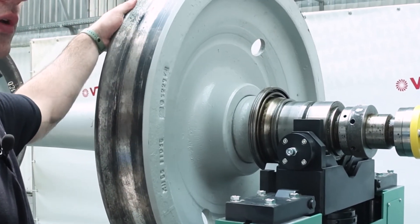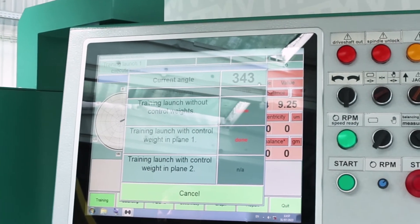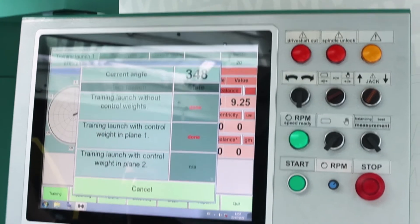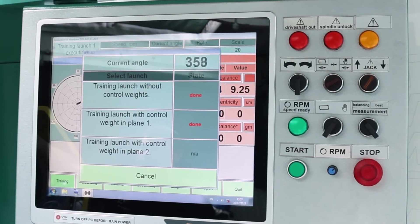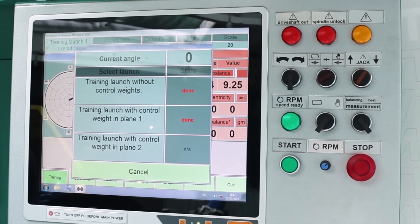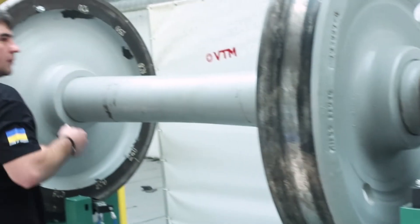Next, we set our zero degrees again. And we rearrange the weight from the first to the second plane.